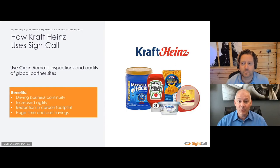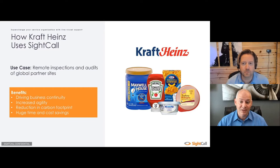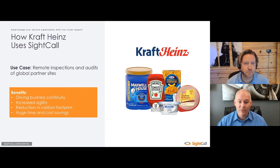One example of where SiteCall visual support is used is at Kraft Heinz. As one of the world's largest food producers and manufacturers, they have a large network of suppliers, and they're using SiteCall to provide remote audits and inspections of those suppliers to ensure that quality assurance and safety standards are being met. Previously, they were doing all of these in person, which had a huge expense in terms of travel and auditor time. Now that they can use SiteCall, they can immediately see and pinpoint a problem and provide corrective action, which has improved their business agility tremendously.